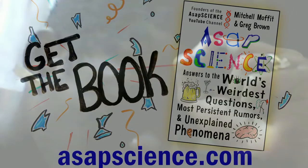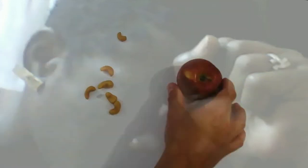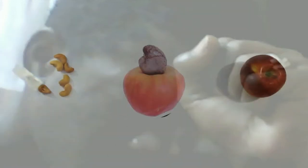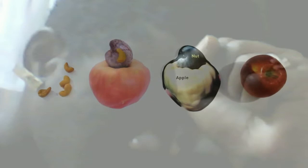Get the book at ASAPScience.com. So you've heard many of life's curiosities, but did you know that cashews grow on apples? In this case, the apple is simply an accessory fruit, with the cashew growing on top.